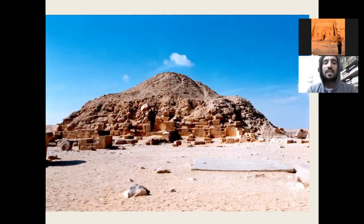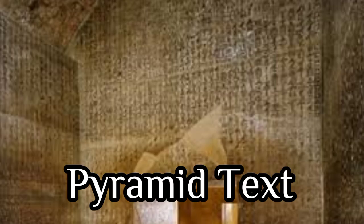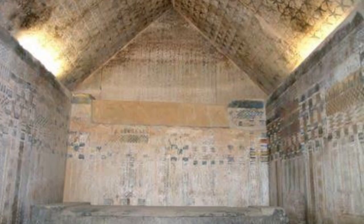But this is something very unique and very important. Why? Because the pyramid of King Unas contains the first written pyramid texts ever in Egyptian history and Egyptian civilization. Once you get inside the pyramid, this is the antechamber and the passage leading us into the burial chamber of the king himself.